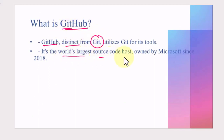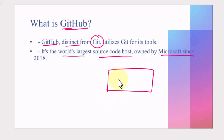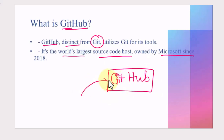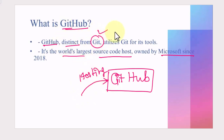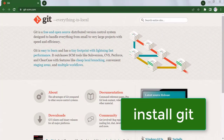GitHub and git are distinct. GitHub is the world's largest source code host and is owned by Microsoft. If we want to host some code remotely we can use GitHub. GitHub is used for hosting purposes, while git is basically used for version control — keeping track of all the history and changes made to the project.